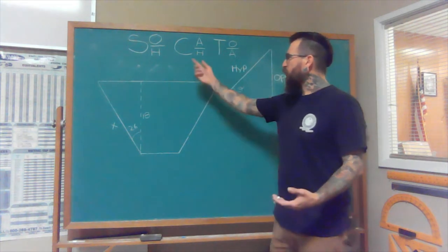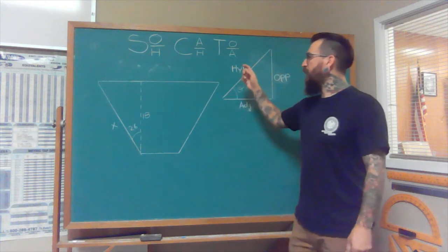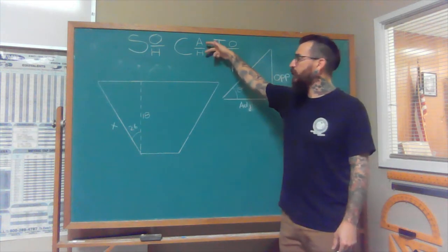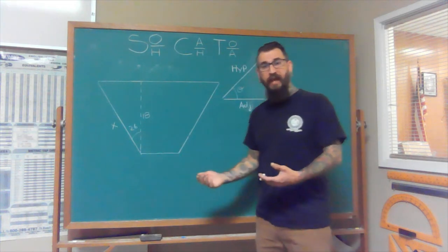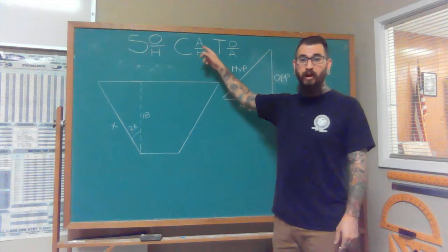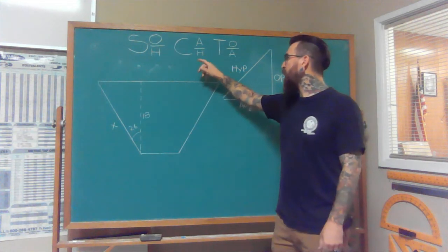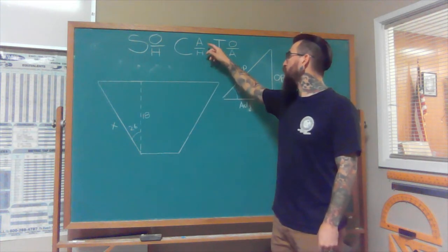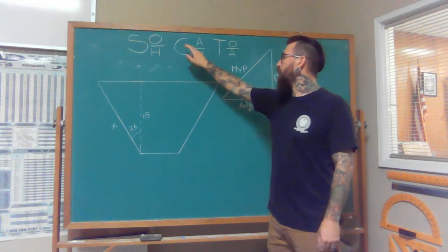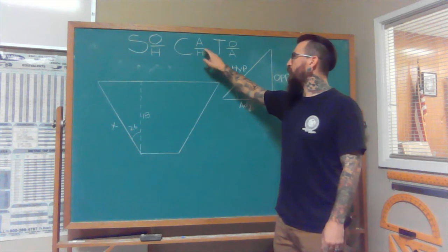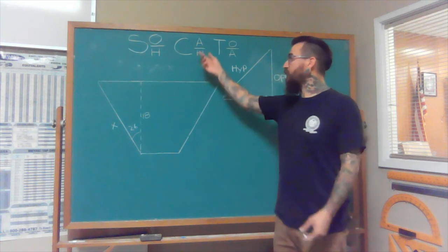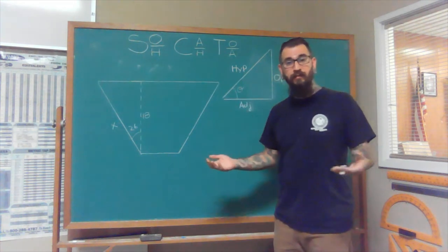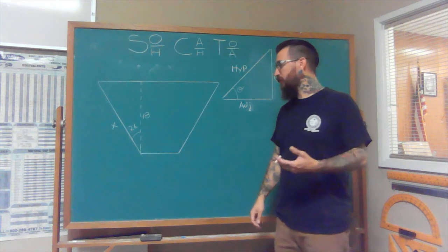So a good way to think about SOH-CAH-TOA is that if we need to find an angle, we can use these two dimensions right here to find what the angle is. But if you already have the angle, this turns into an algebra problem where the length of the leg is going to equal the cosine of the angle and then multiply by one of these numbers to find the other missing number. Because the opposite of division, as it's laid out here, is going to be multiplication. So you can spin it around and find out everything that you need to know.